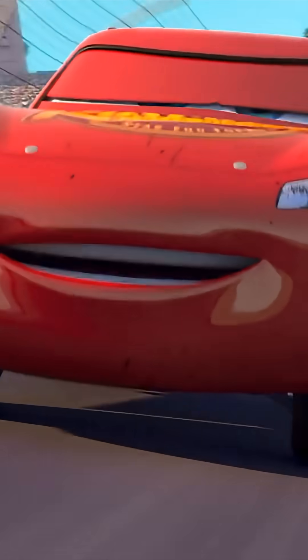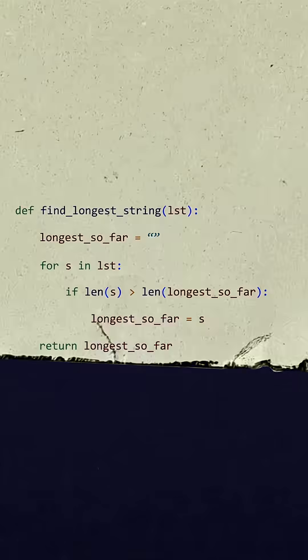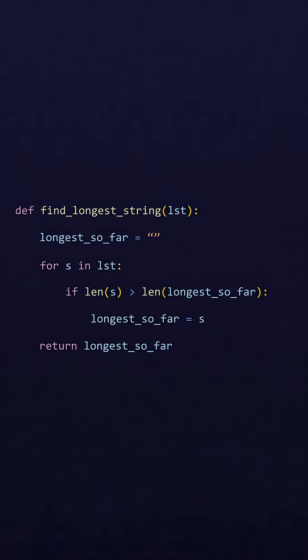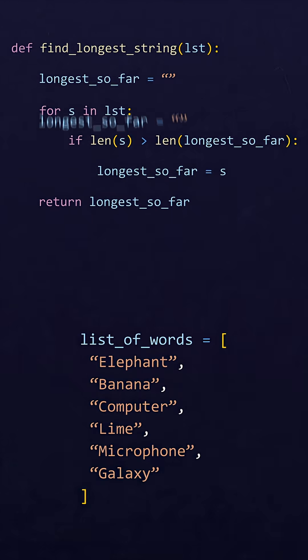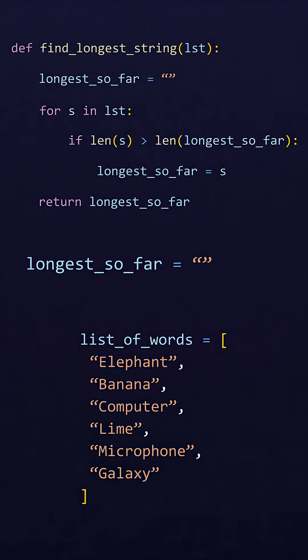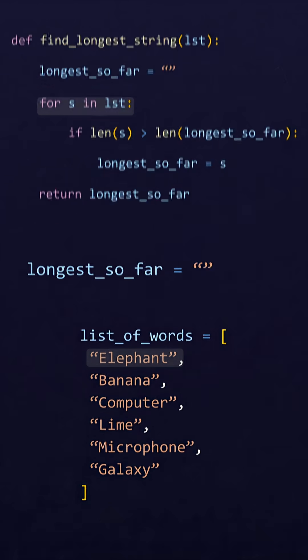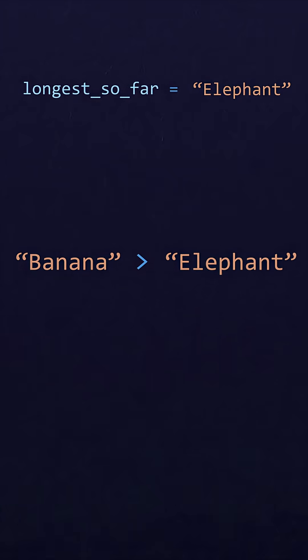In computer science, we want to write fast algorithms. Here's a Python implementation of an algorithm that finds the longest string in a list. It keeps track of the longest string so far in a variable, then iterates over all of the input strings and compares them to the largest so far.